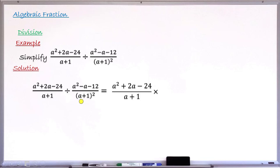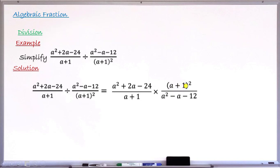So I keep my first fraction as is, change the division sign to multiplication, and write the reciprocal of the second fraction: (a + 1)² becomes the numerator while (a² − a − 12) becomes the denominator. This gives us: (a² + 2a − 24)/(a + 1) multiplied by (a + 1)²/(a² − a − 12). The division problem is now converted to a multiplication problem.